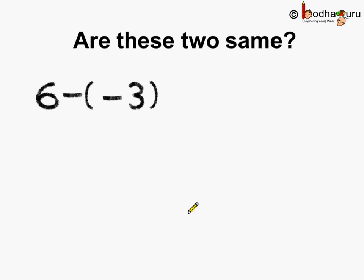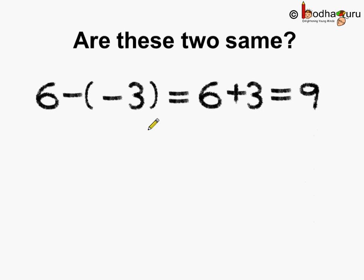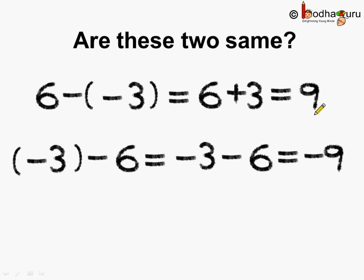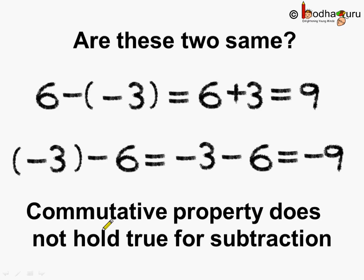Now let's see the case of subtraction. In case of integers, 6 minus minus 3: minus minus becomes plus, so 6 plus 3 equals positive 9. Now if we reverse the order, it becomes minus 3 minus 6, which equals minus 9. So in both cases the answer is different — here the answer is 9, and when we change the order we get minus 9. So we say commutative property does not hold true for subtraction in case of integers.